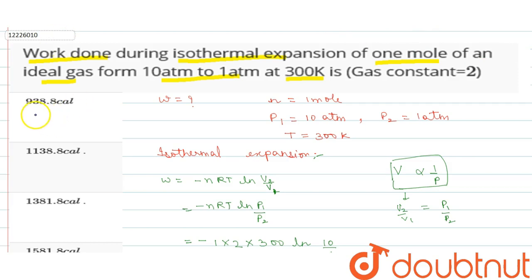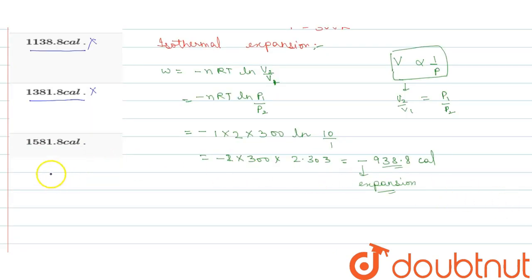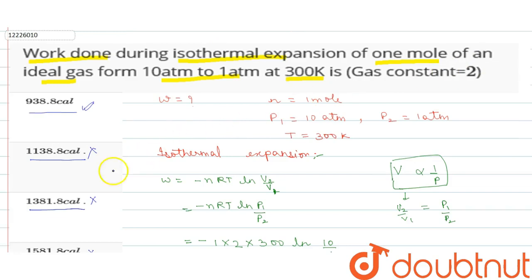Option 938.8 calorie. Next is 1138.8. Next is 1381.8. Last option is 1581.8. The correct option is the first one.